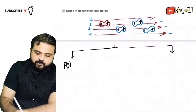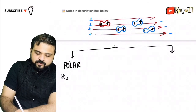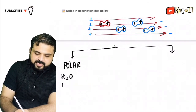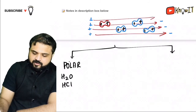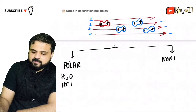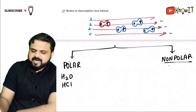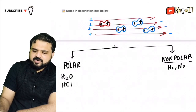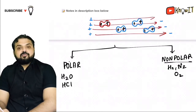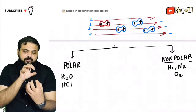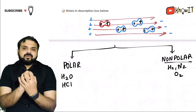Molecules like HCl are polar molecules, whereas H₂ and O₂ are non-polar molecules, because in symmetric molecules the centers of positive and negative charge coincide.